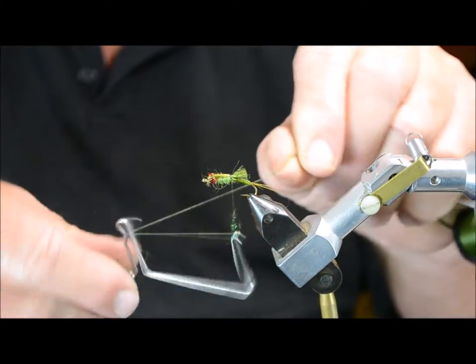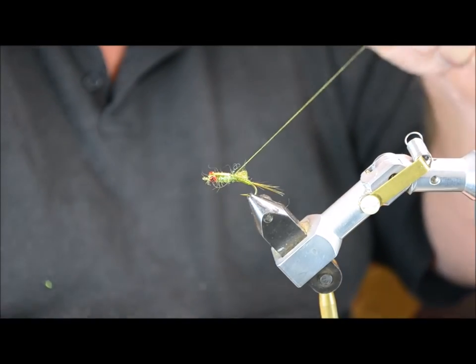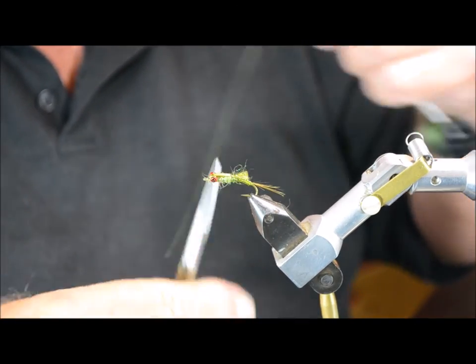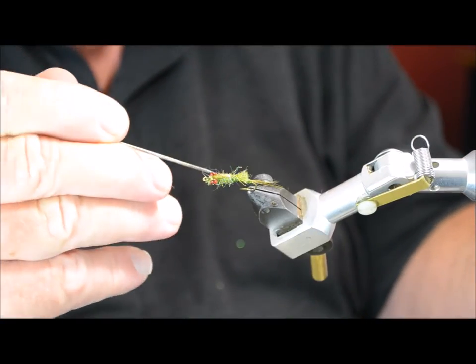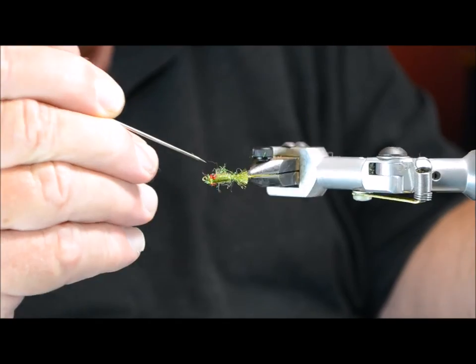The whip finisher. And in essence that fly is done. We'll just get our dubbing needle and just pull out a few fibers underneath just to simulate the legs.